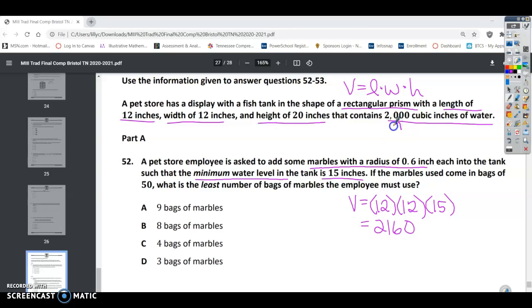Now it says that we already have 2,000 cubic inches of water. So this is what we need, and we already have 2,000. So we need 160 cubic inches still to be full.